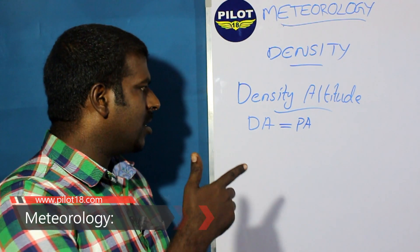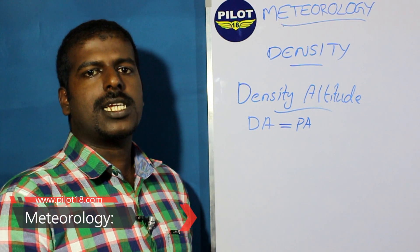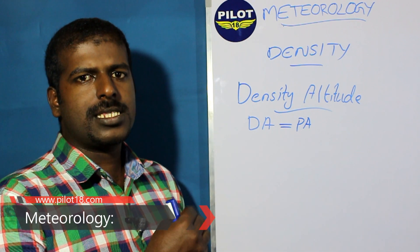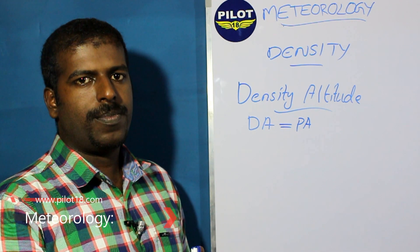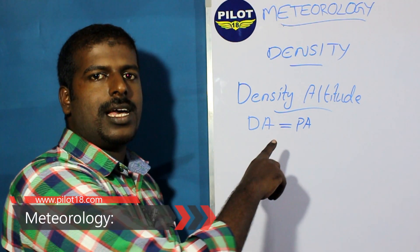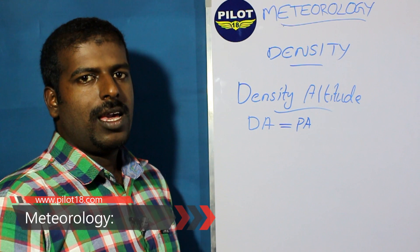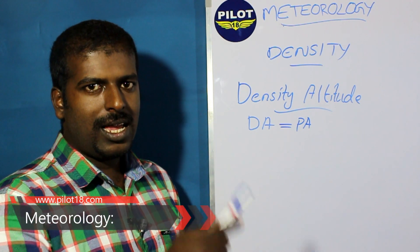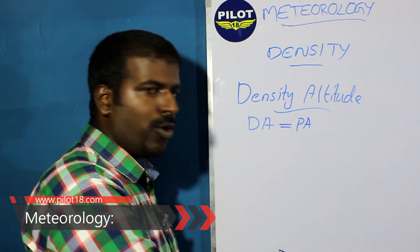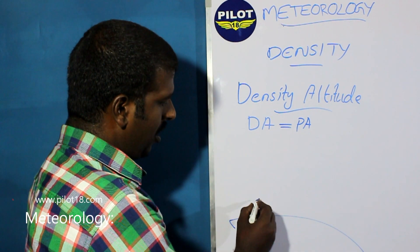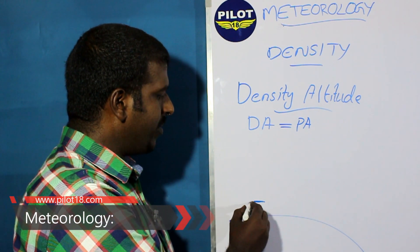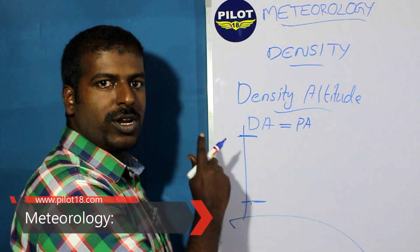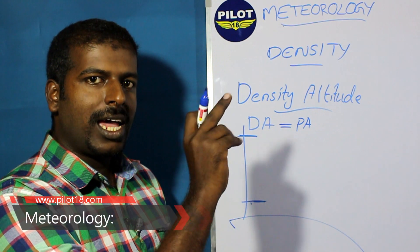If density altitude is high, that means low density. If density altitude is less, that means high density. Less density altitude means density is more — this can happen at lower elevations closer to earth. High density altitude can happen at greater heights. Don't confuse high density with high density altitude — it is high density altitude that refers to the altitude value.